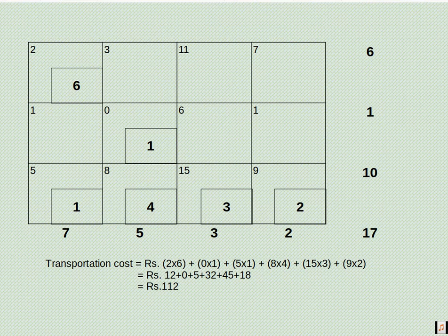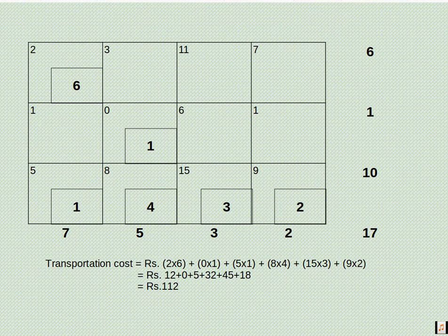This is our allocated table. We have to calculate transportation cost by multiplying allocation into the cost, so 2 into 6, 0 into 1, 5 into 1, 8 into 4, 15 into 3, 9 into 2. The total cost will be 112 rupees.